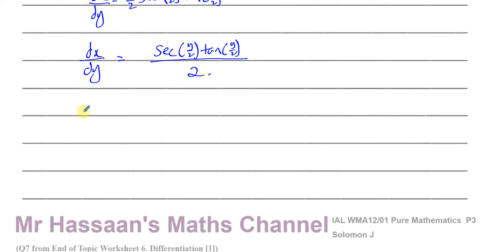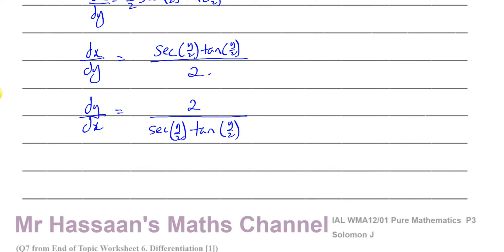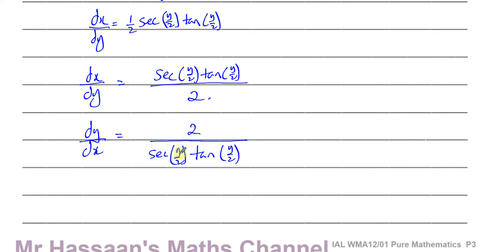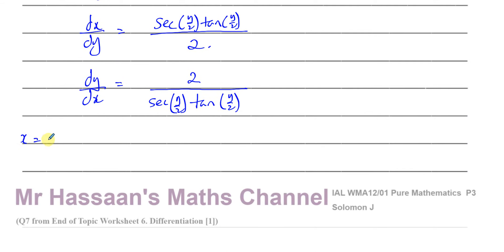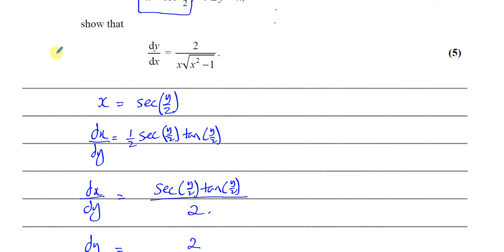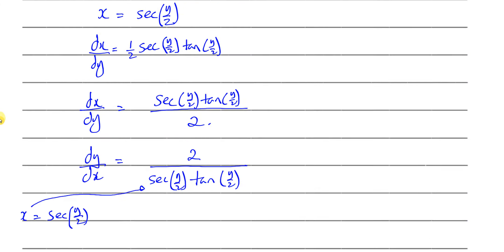We want dy/dx, so we take the reciprocal of dx/dy — the numerator becomes the denominator and vice versa. So dy/dx equals 2 divided by secant(y/2) times tan(y/2). We have something in the right form, except we need to replace terms in y with terms in x. One substitution is immediate: since x equals secant(y/2), we can replace secant(y/2) with x, giving us 2 over x. Now we still need to express tan(y/2) in terms of x.